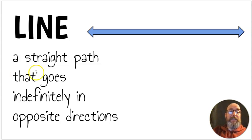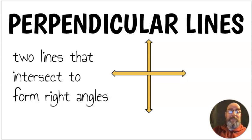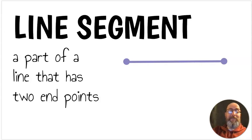Next we have a line. A line is a straight path that goes indefinitely in opposite directions. The reason I put two little arrows there is because a line actually technically never stops. It goes on and on. That's what indefinite means. Parallel lines are lines that never intersect. That means they never touch. Perpendicular lines are two lines that intersect to form right angles. You can see right angles right here every place the lines intersect. Those are perpendicular lines. Two lines that intersect to form right angles. Next we have a line segment. A line segment is a part of a line that has two endpoints. So if you just draw a line and you stop it, that's a line segment. It's a part of a line that has two endpoints. A beginning and an end.